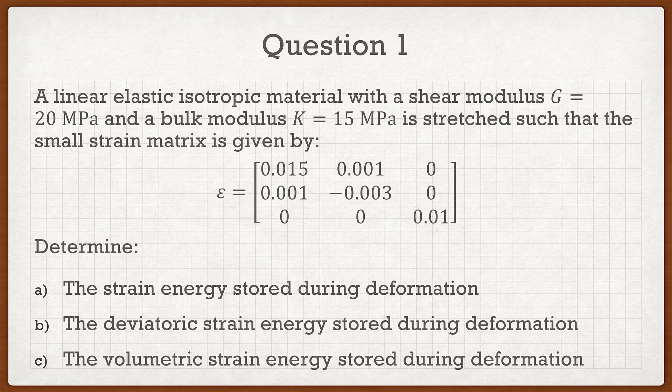So let's look at question number one. Question one says: a linear elastic isotropic material with a shear modulus G of 20 MPa and a bulk modulus K of 15 MPa is stretched such that the small strain matrix is given, and it gives us our small strain tensor. This is very reminiscent of older questions where we're either given the strain tensor or the stress tensor and asked to do operations with it. In this case we're given the strain tensor.